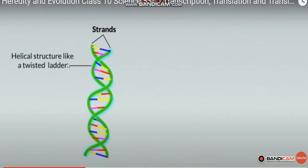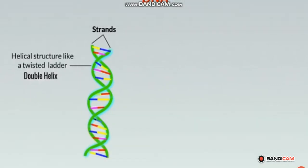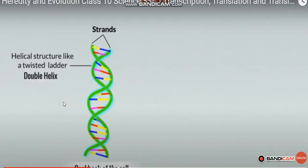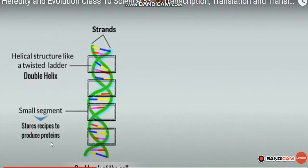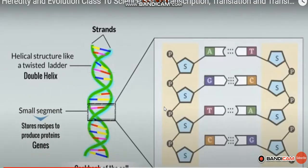DNA consists of thousands of small segments with twists. Some of these small segments produce proteins — these are like recipes that produce proteins. Such segments are known as genes.